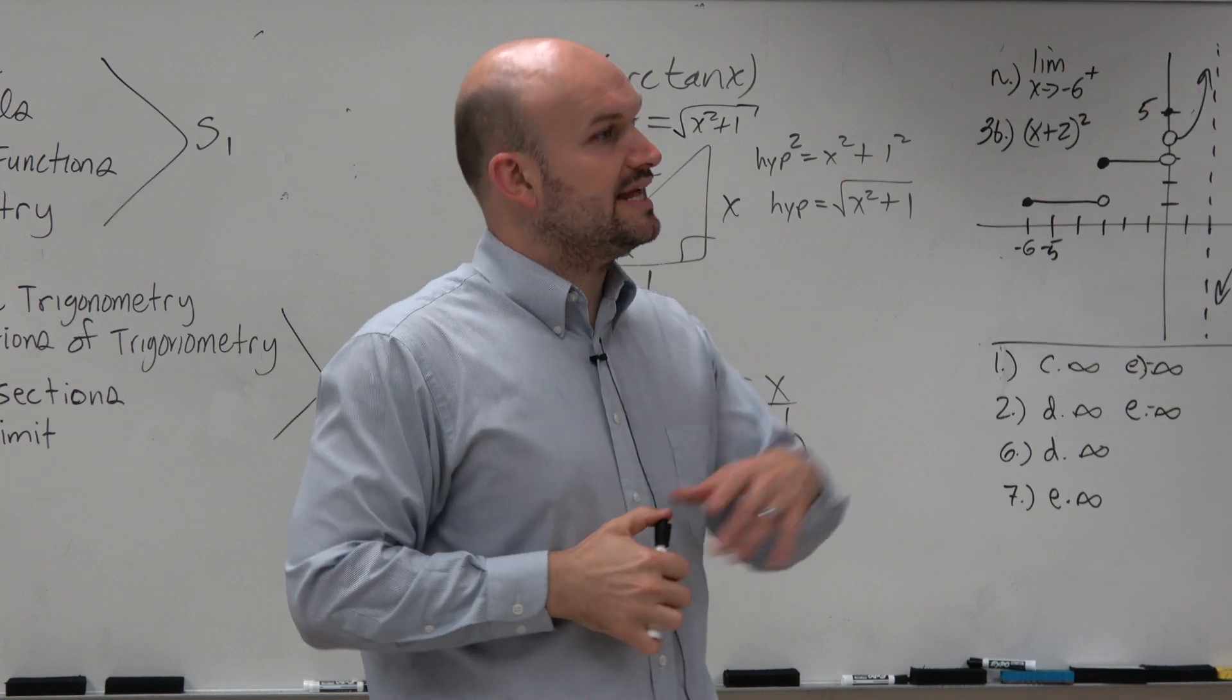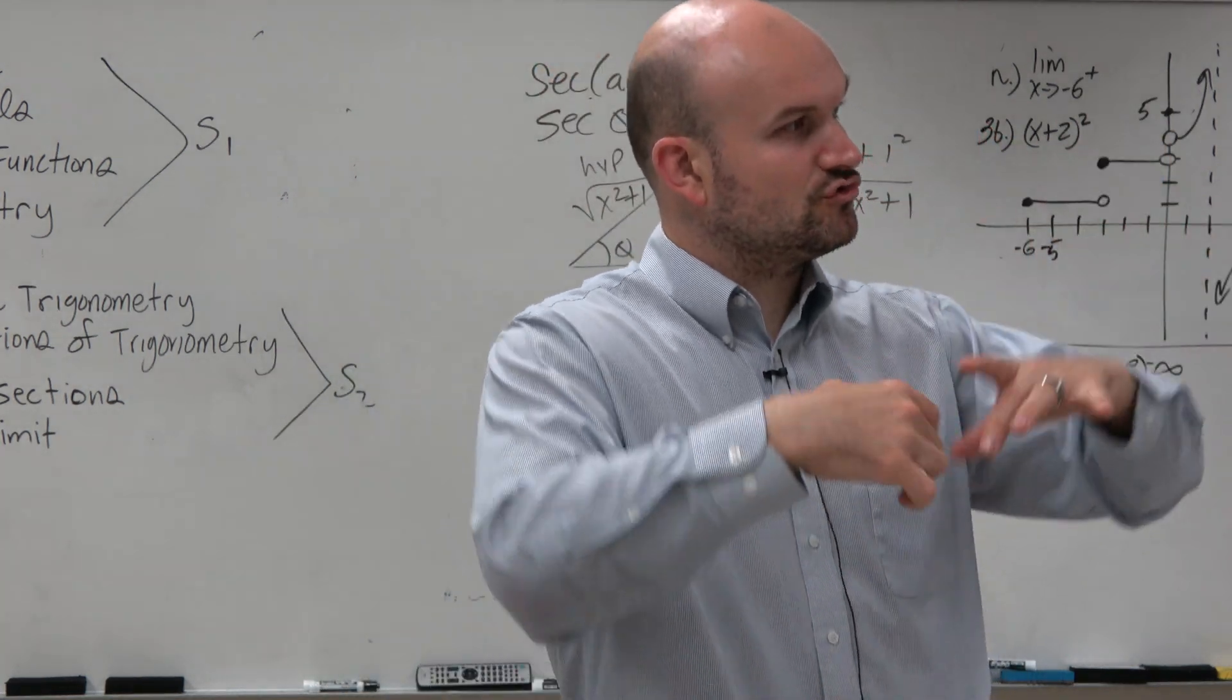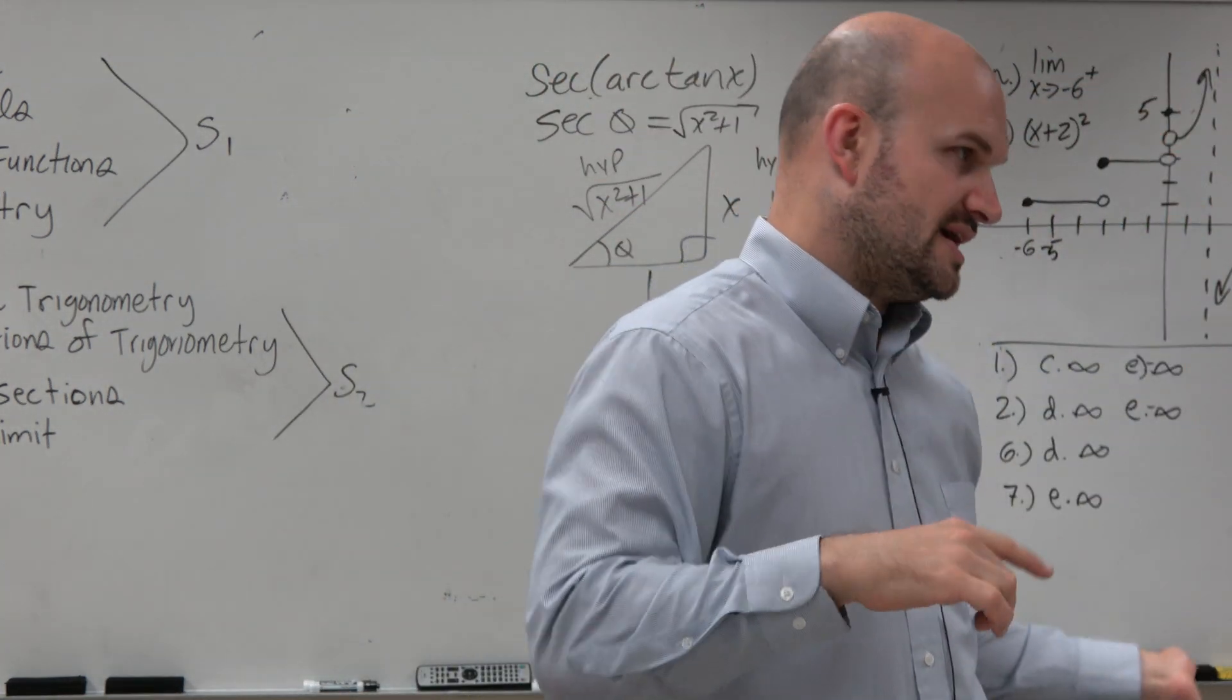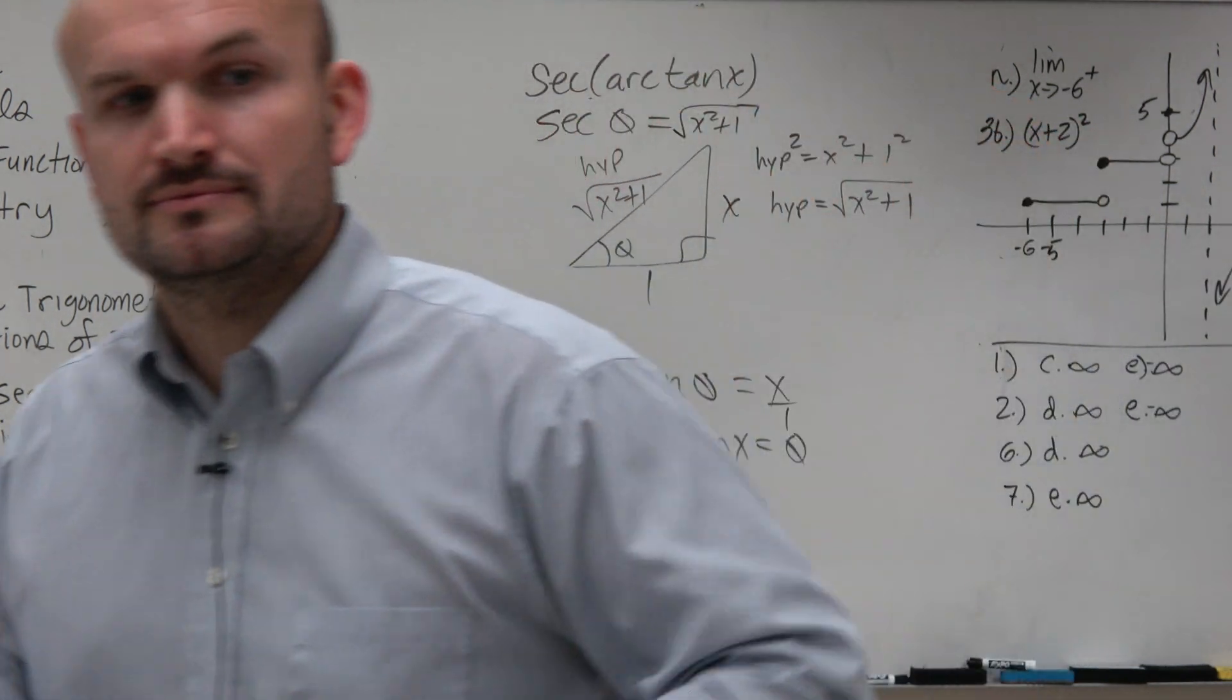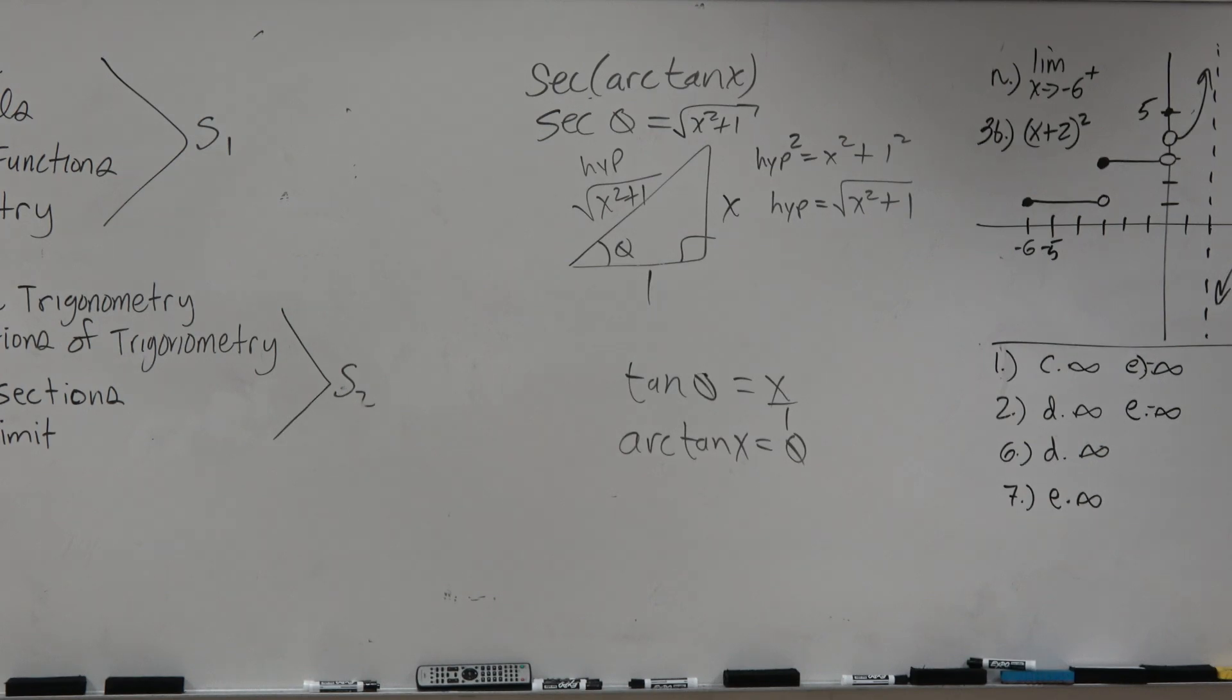So you use the relationship of the arc tangent to create the triangle, and then you take the sine, cosine, tangent, or in this case, secant of that triangle. And if you remember, we did problems we didn't do.